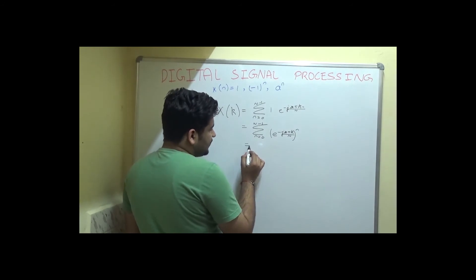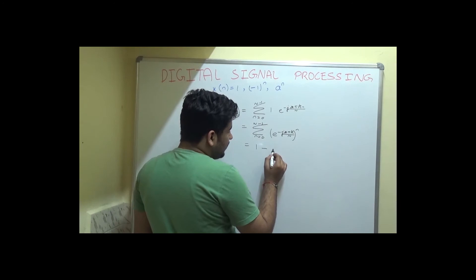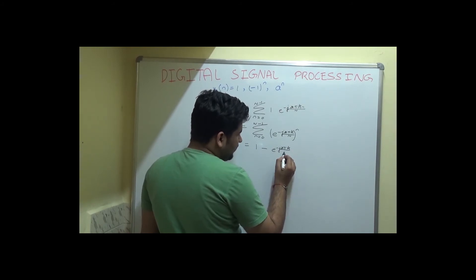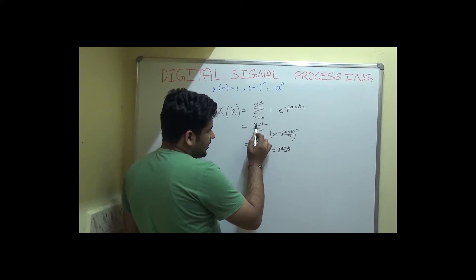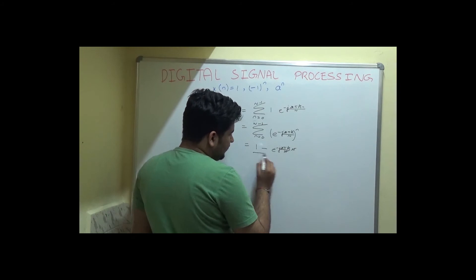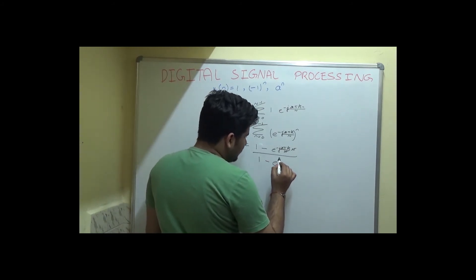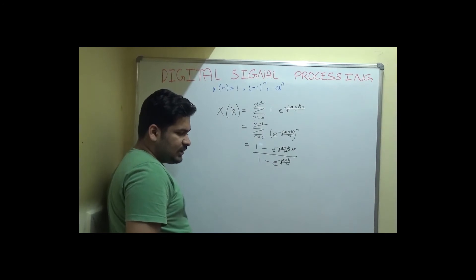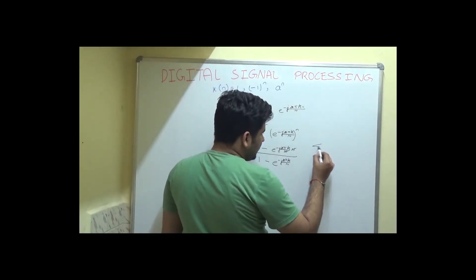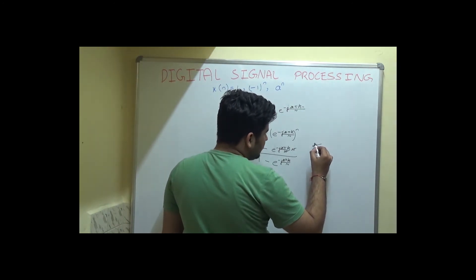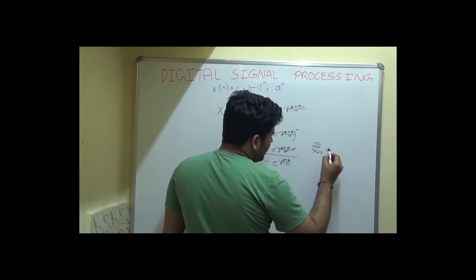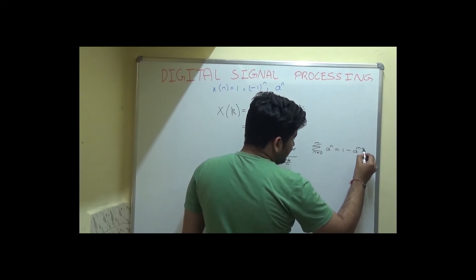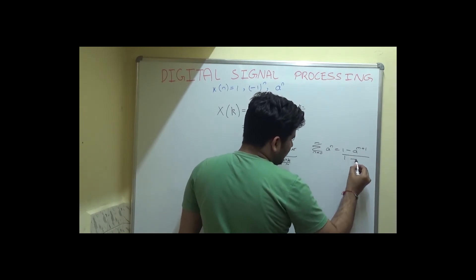To find this summation, the formula is very simple: summation from n=0 to m of a^n equals 1 minus a raised to the power m plus 1, divided by 1 minus a. Applying this here gives us: 1 minus e raised to the power minus j 2 pi k divided by N, raised to the power N (upper limit N minus 1, plus 1), all divided by 1 minus e raised to the power minus j 2 pi k divided by N.